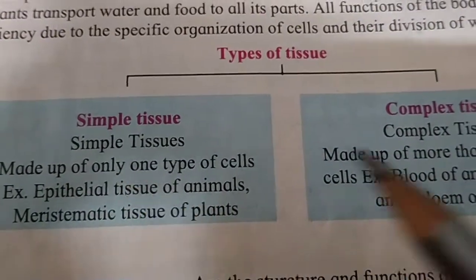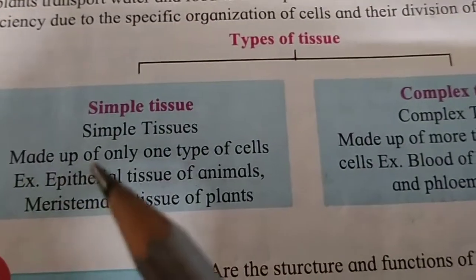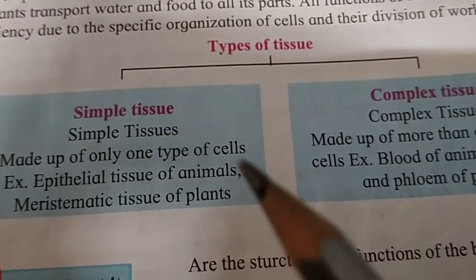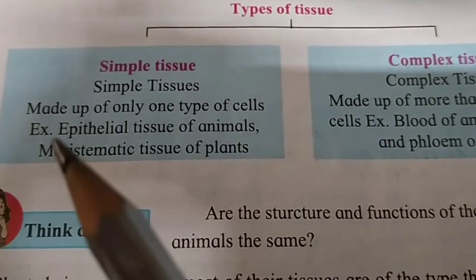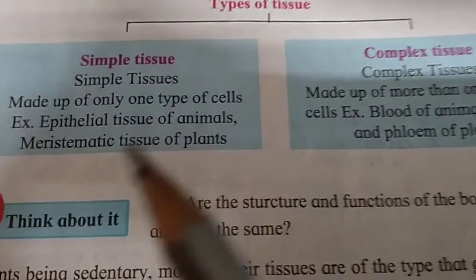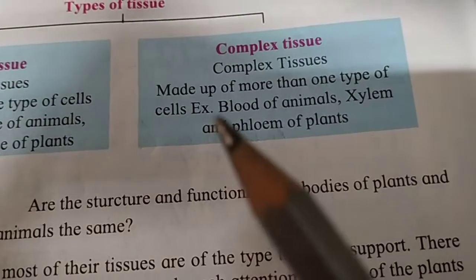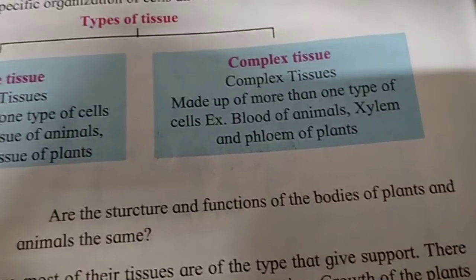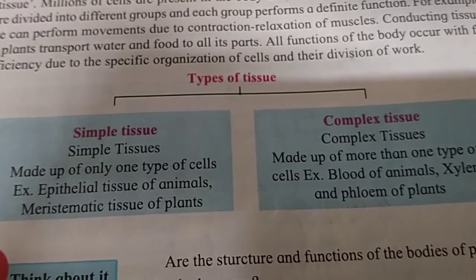Simple tissue is made up of only one type of cell, while complex tissue is made up of more than one type of cell. Examples of simple tissues include epithelial tissues of animals and meristematic tissues of plants. Examples of complex tissues include blood of animals, and xylem and phloem of plants.